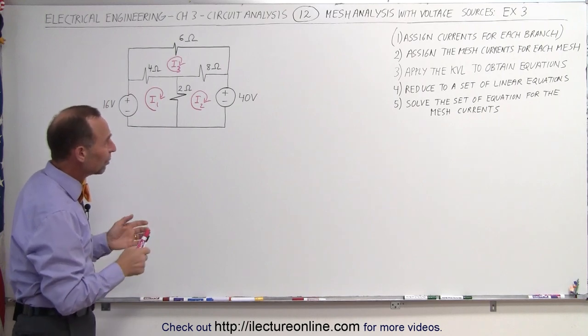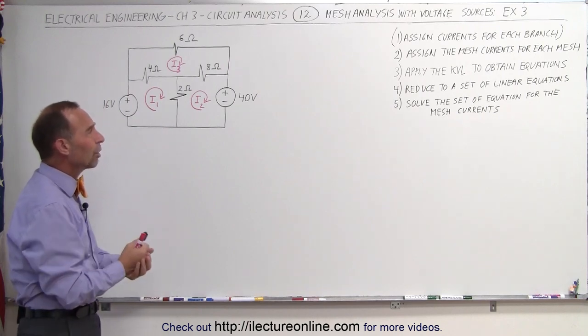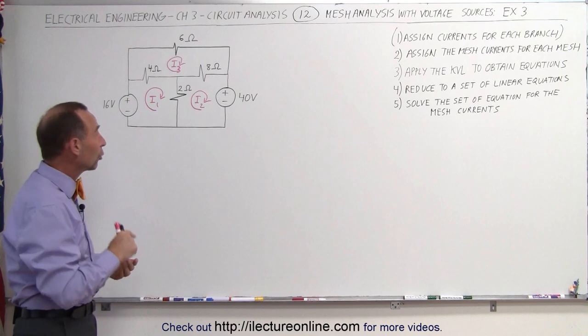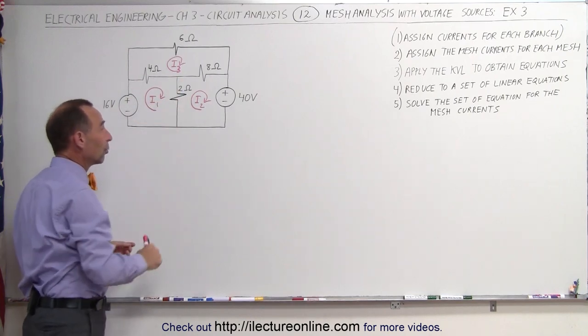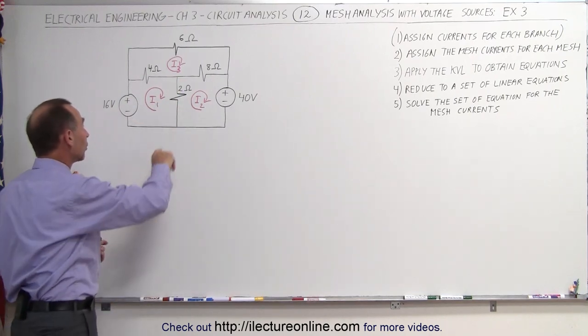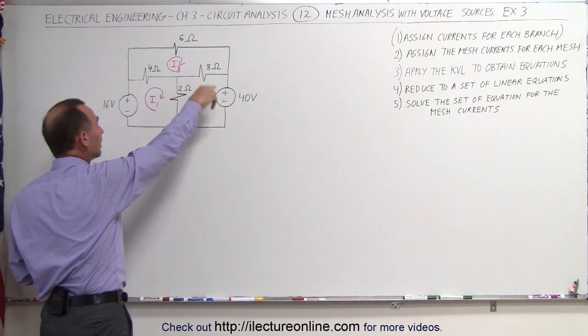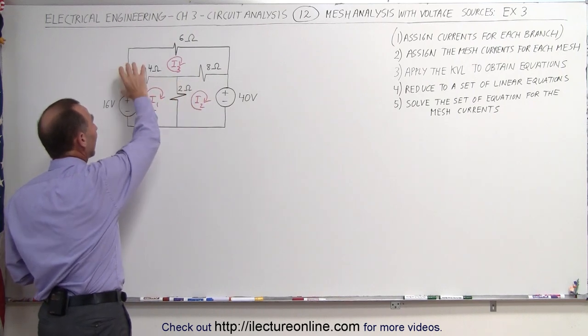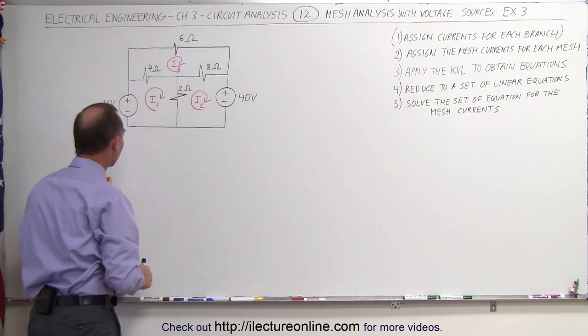The next thing we want to do is apply Kirchhoff's voltage law to obtain the equations. Since we have three meshes, we're going to need three equations. We're going to go around each of the meshes and add up all the voltage rises and drops.